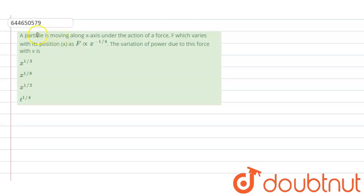Hello student, so the question is a particle is moving along x-axis under the action of force F which varies with position as F is directly proportional to x to the power minus 1 by 4. The variation of power due to this force with x is